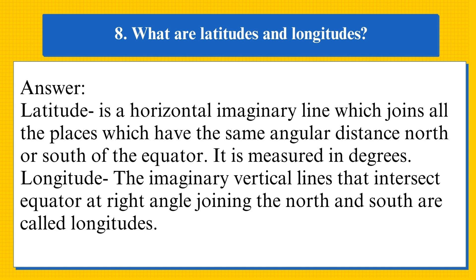The next question: what are the latitudes and longitudes? Latitude is a horizontal imaginary line which joins all the places which have the same angular distance north or south of the equator. It is measured in degrees. Longitude: the imaginary vertical lines that intersect the equator at right angles, joining the north and south, are called longitudes.